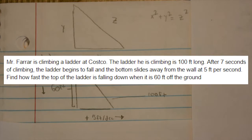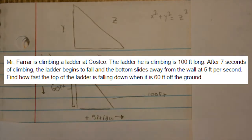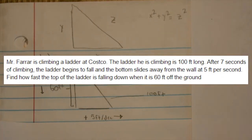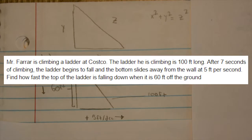For our first problem, Mr. Ferrari is climbing a ladder at Costco. The ladder he is climbing is 100 feet long. After seven seconds of climbing, the ladder begins to fall, and the bottom slides away from the wall at 5 feet per second. Find how fast the top of the ladder is falling down when the ladder is 60 feet off the ground.